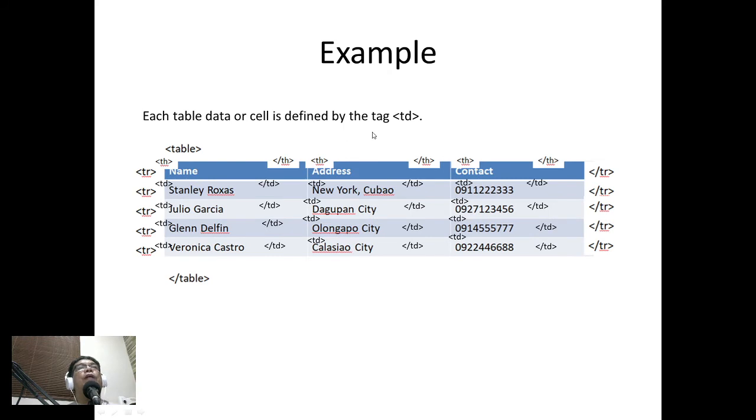Then next we have the TD. So each table data or cell is defined by the tag TD. So similarly with TH, after TR here TD, then we have here Stanley Rojas slash TD, then TD New York Cubao slash TD, TD then we have the contact number and then slash TD before slash TR. That means that is already one row.